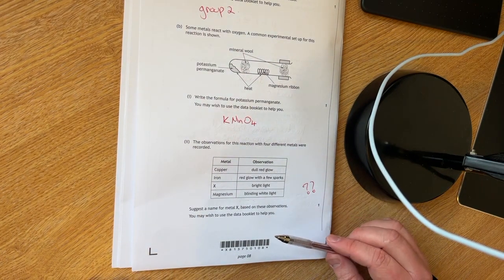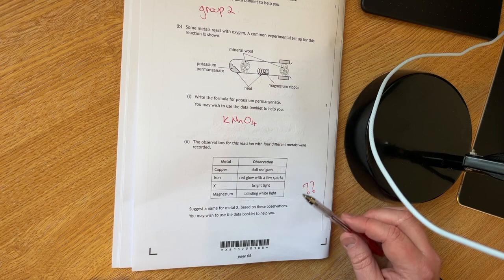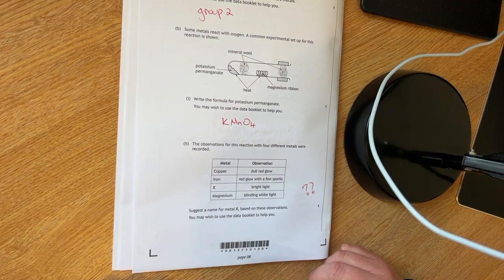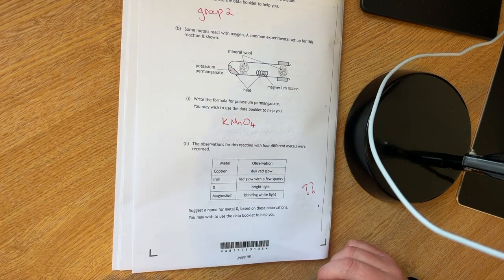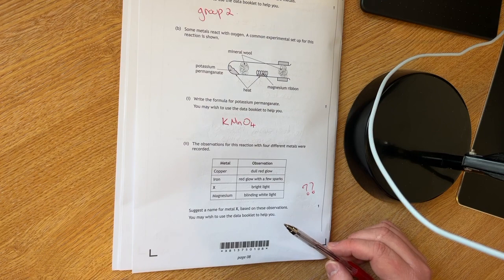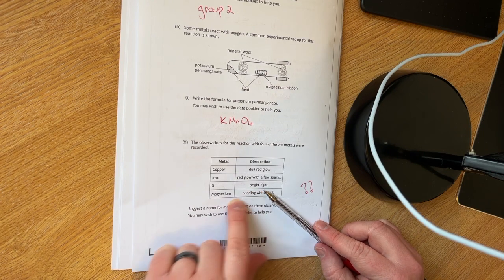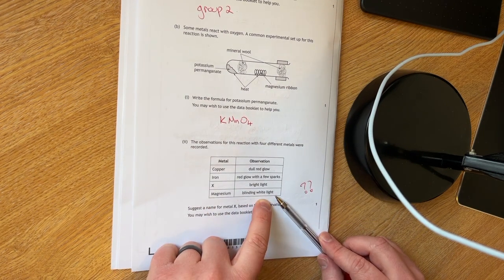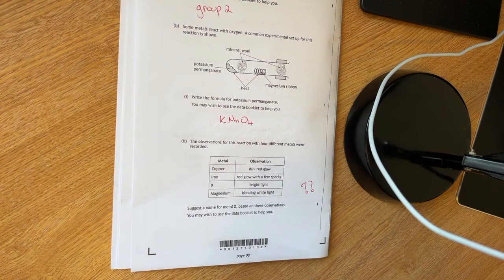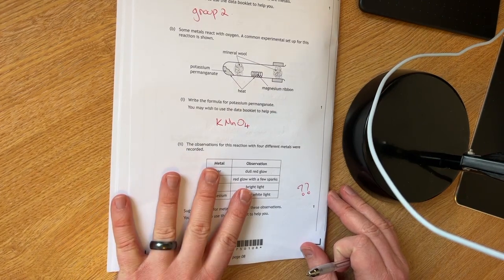B part two. I don't know the answer to this. And I've tried using the data booklet. There might be something I'm missing here. However, out of the entire exam, this is the one question I don't know the answer. And I'm not going to sit here and make up something. I'm just going to leave it. When I see bright light, I think of magnesium. However, magnesium is a blinding white light. So unless I am missing something here, I'm not too sure on that one.